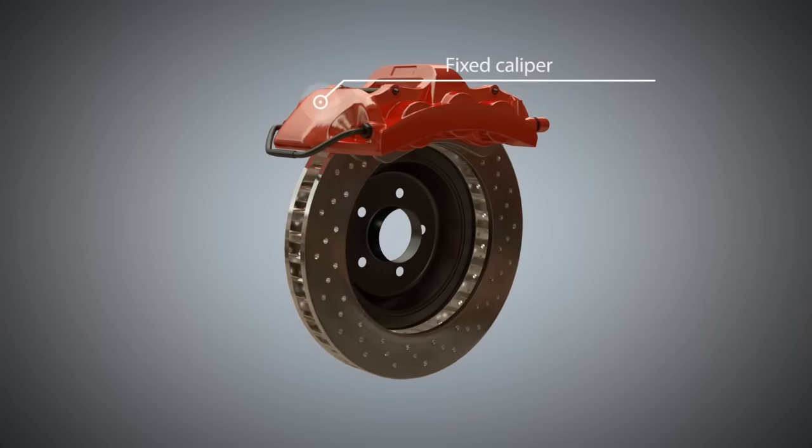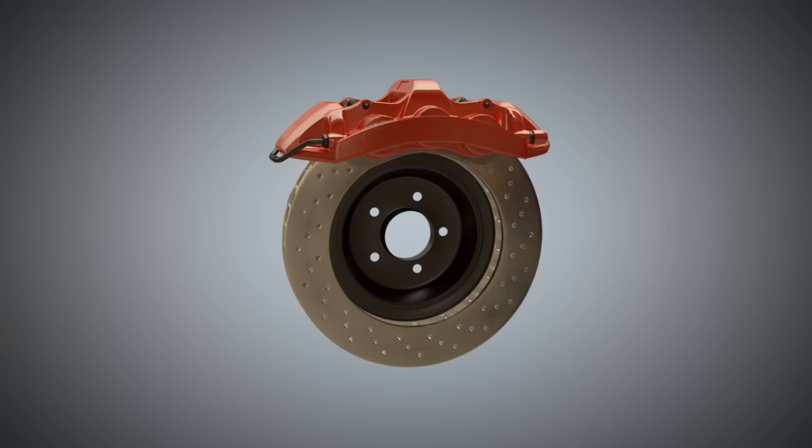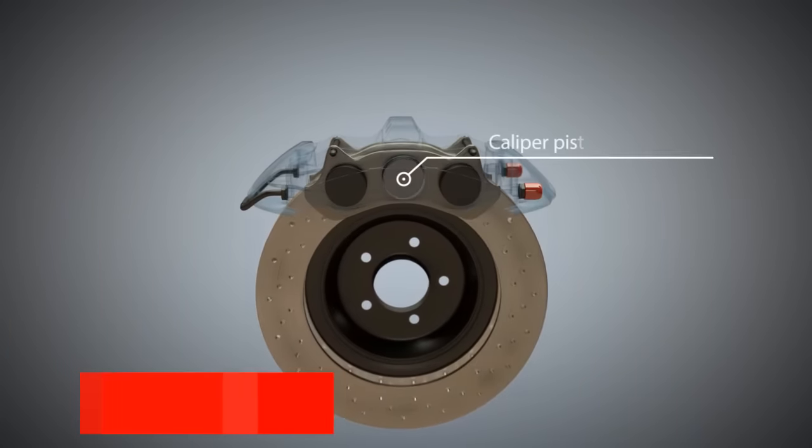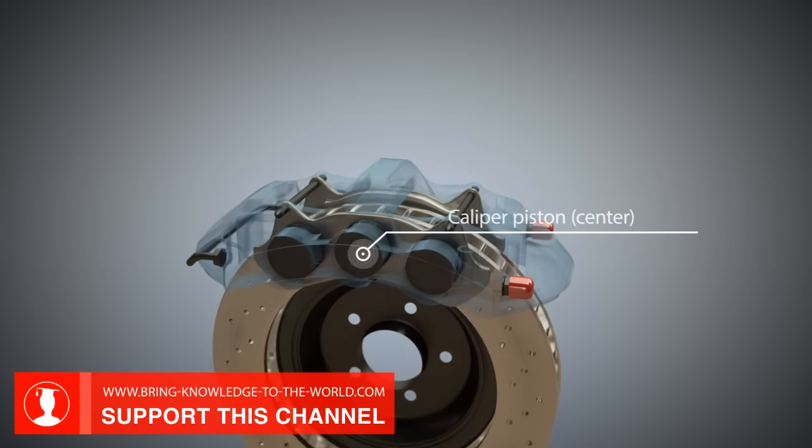Another component is the caliper. Here, a monoblock caliper is shown. The caliper has caliper pistons on both sides.